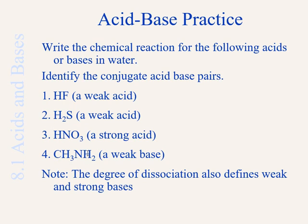Finally, CH3NH2 is a weak base. When dissolved in water, it accepts H+ from water, so H2O on the left and OH− on the right are one conjugate acid-base pair, while CH3NH3+ on the right and CH3NH2 on the left are the other conjugate acid-base pair.